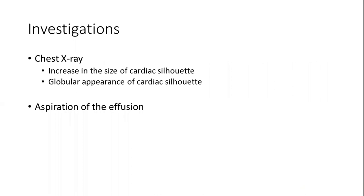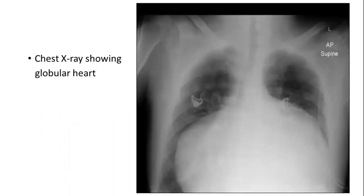The next investigation is chest X-ray. When there is a large collection of fluid in the pericardium, the cardiac silhouette increases and the heart appears globular — a flask or water-bottle type appearance. Aspiration of the effusion fluid is also important: if tuberculosis is suspected, we can aspirate the fluid and test it for acid-fast bacilli; PCR tests can identify viral etiology; and malignant cells can also be detected. The X-ray image shows a globular heart with an enlarged cardiac silhouette, typical of pericardial effusion.